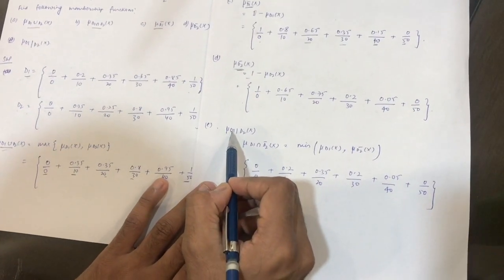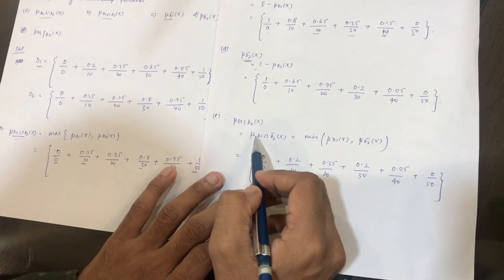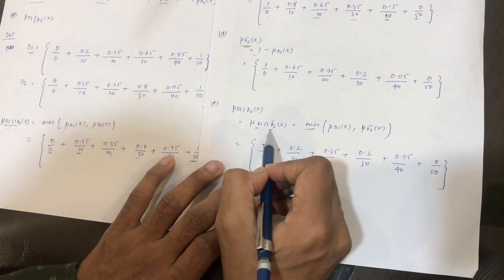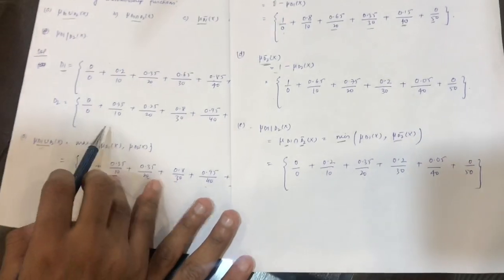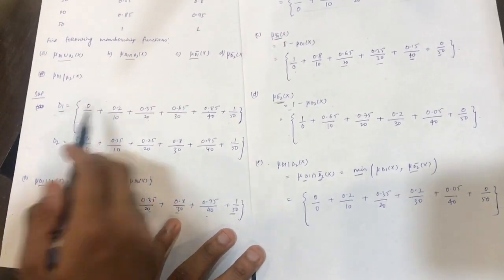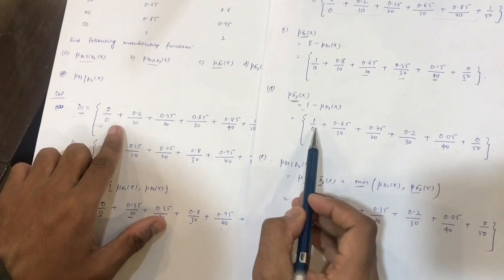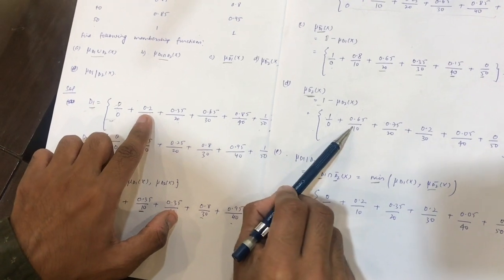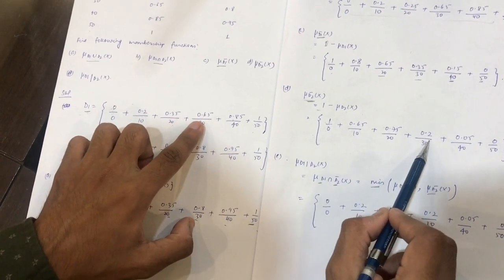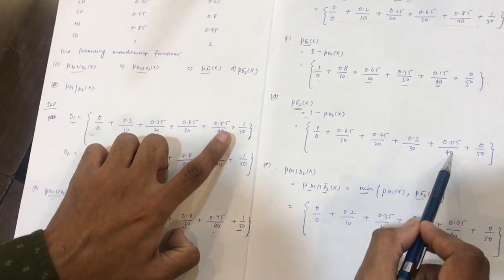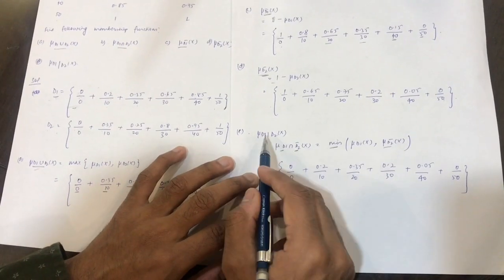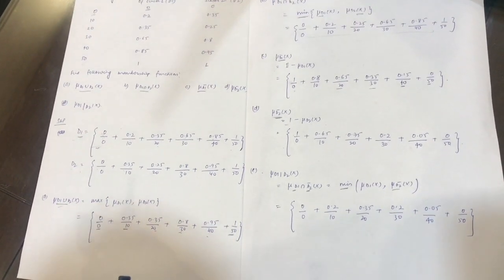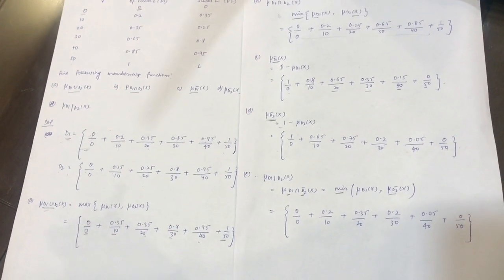Now there is μD1/D2(x), which we write as μ(D1 ∩ D2')(x). You have to take the minimum of D1 and D2 complement. D1(x) is here and D2 complement is here, so out of these two we take the minimum: 0, 0.2, 0.35, 0.2, 0.05, 0.05, and 0. This is the final answer for μD1/D2(x). These are the operations we can perform on fuzzy sets. If you like the video, please like, subscribe, and share. Thank you.